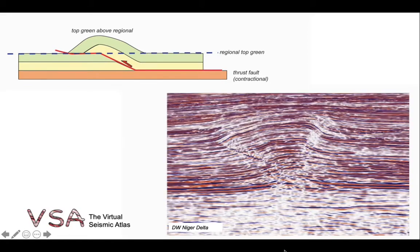Well, let's look at an example of a thrust. Here we are from deep water Nigeria. On a seismic profile, let's add an interpretation of a horizon, and we can forecast that away from the fold structure that we see, this horizon would have had this orientation. So this is the regional, the long wavelength behavior of this horizon, sub-horizontal.